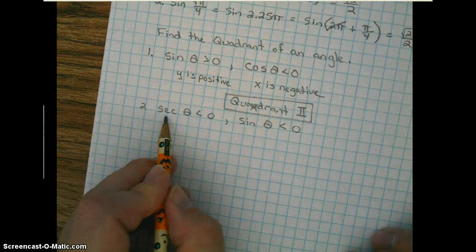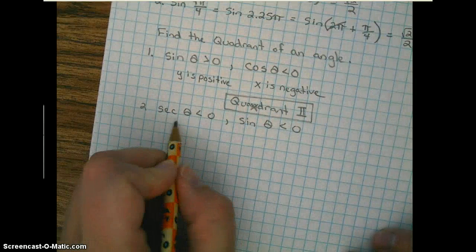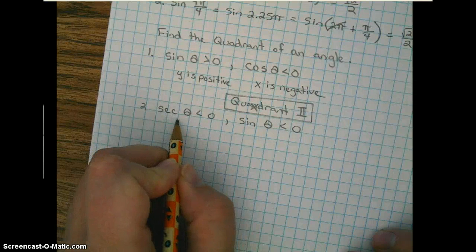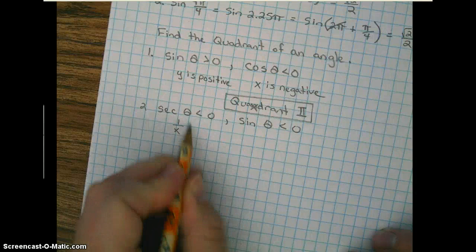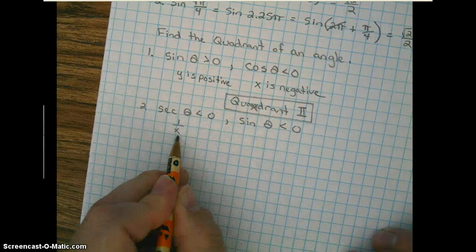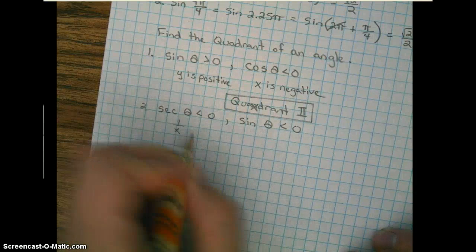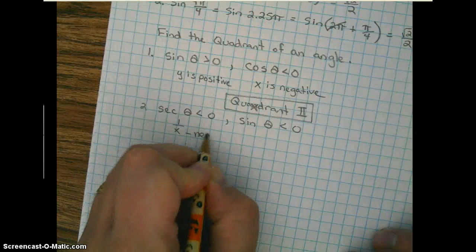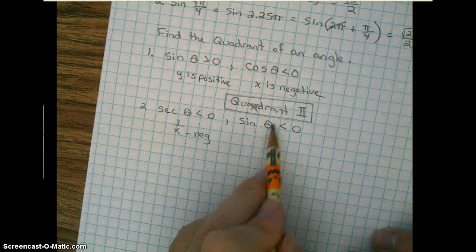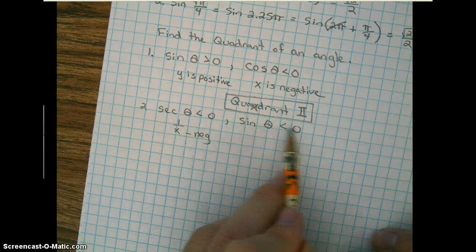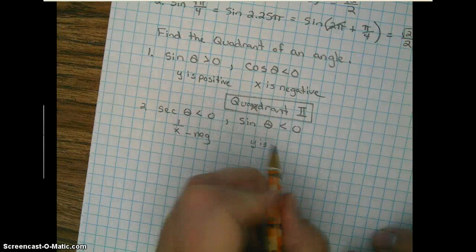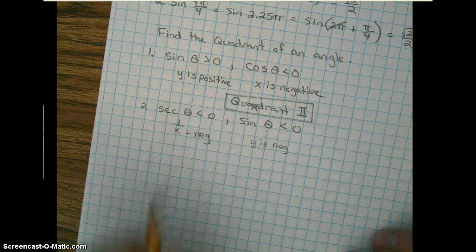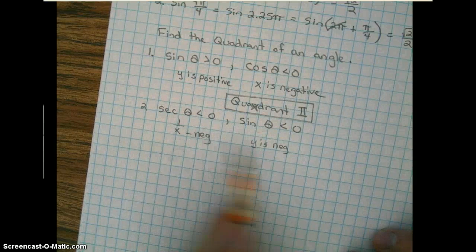Well, the definition of secant is, if we're on the unit circle, 1 over x. So in order for this to be less than 0, x would need to be negative. And again, here we have y less than 0, so y is negative.